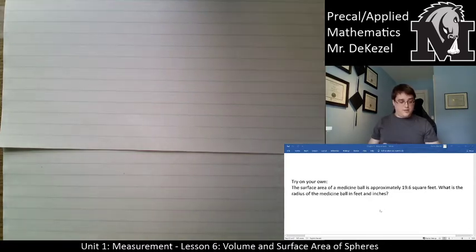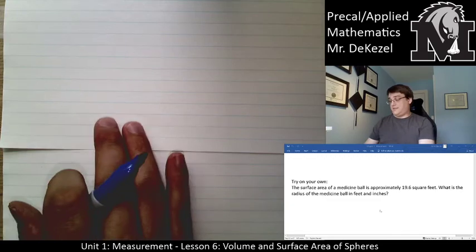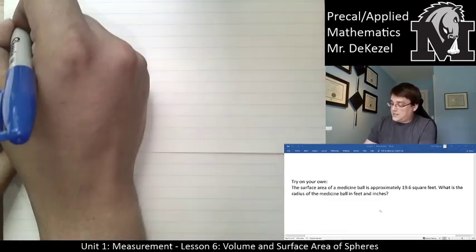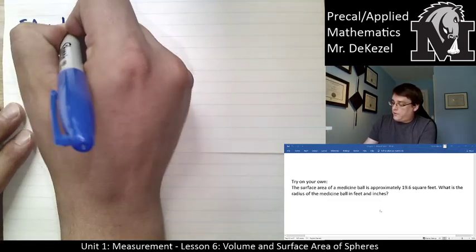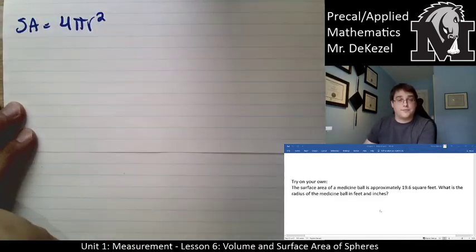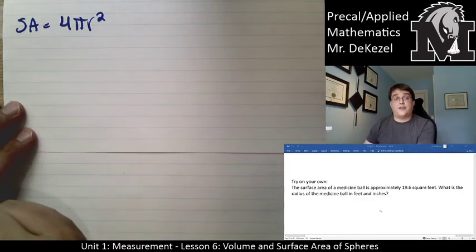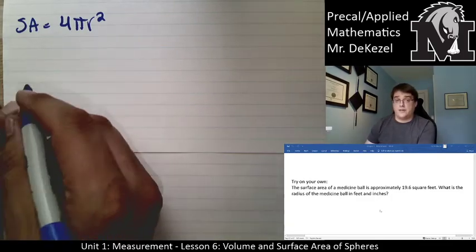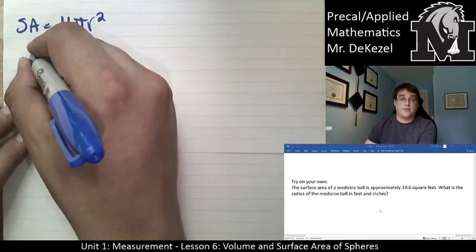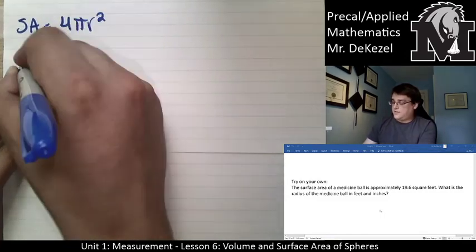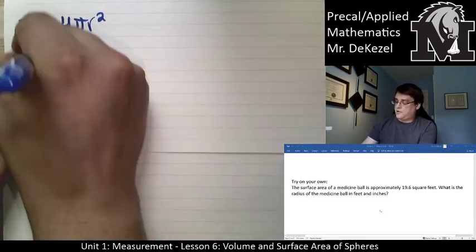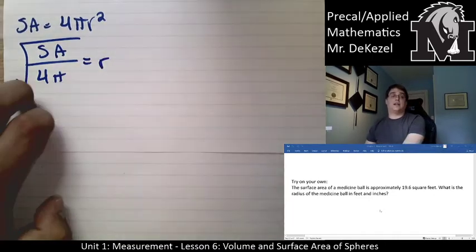This is a question about the surface area of a medicine ball. It is approximately 16.9 square feet surface area. What is the radius? So this time we're finding the radius. Surface area equals 4πr². We know that from the formula. We're given the surface area. 4 and π are just numbers, so we can find out what r is.